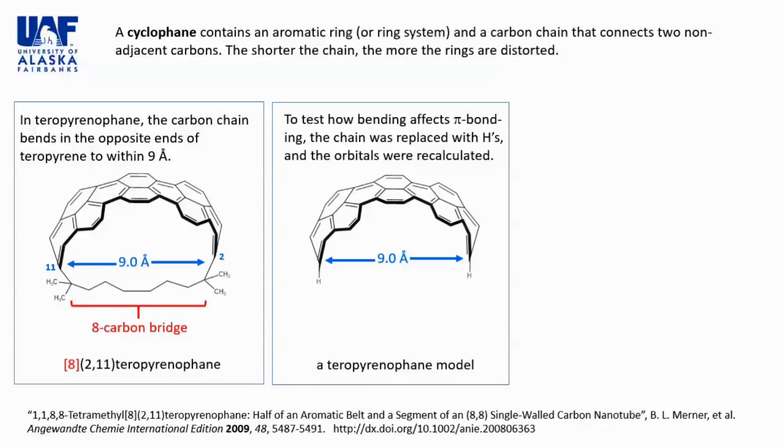Teropyrenophane was synthesized in 2009 by Graham Bodwell, Brad Lerner, and Louise Daw of Memorial University, St. John's, Newfoundland. In this cyclophane, the opposite ends of teropyrene are bent to within nine angstroms of each other.